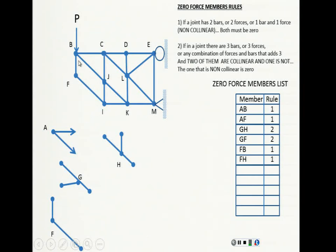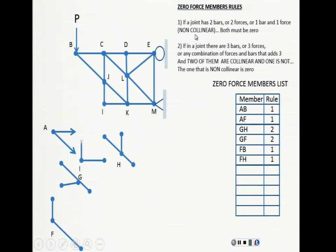I erase those two from the drawing. Now looking at joint I, I have two bars and they are non-collinear. If I have two bars that are non-collinear, both of them are zero. So IJ and IK are rule number one and they are zero. I erase them from the drawing.